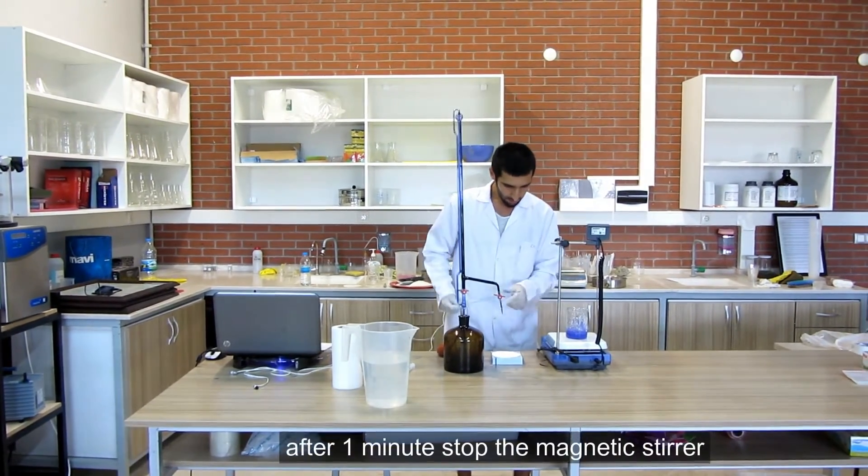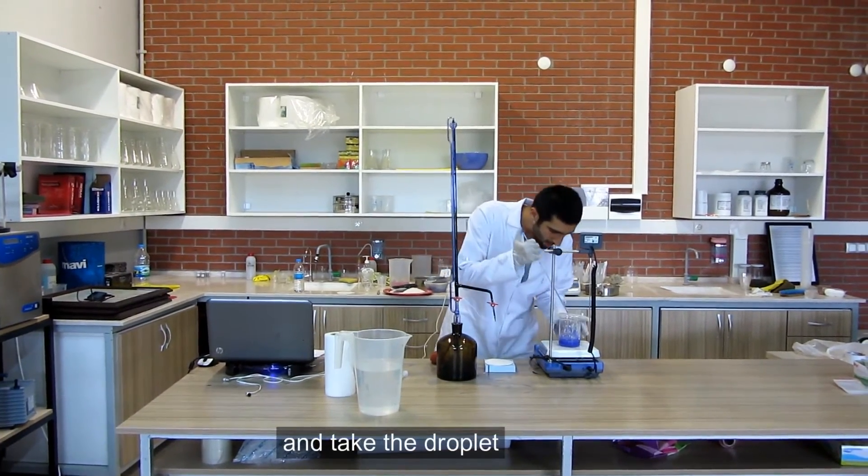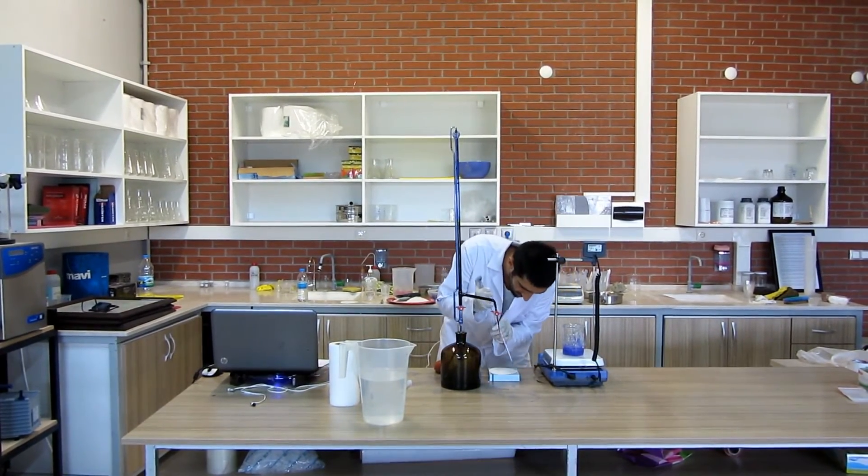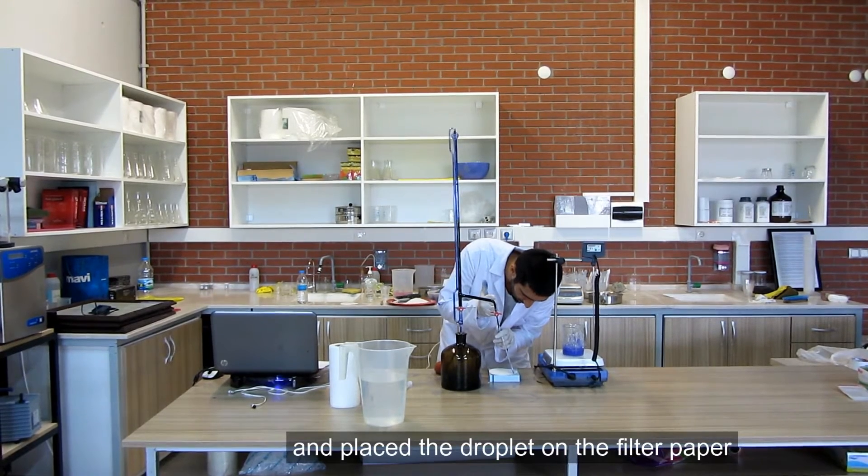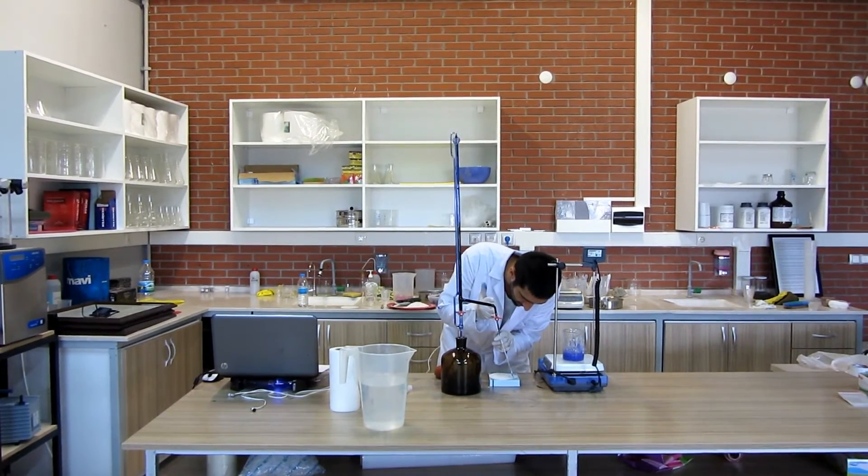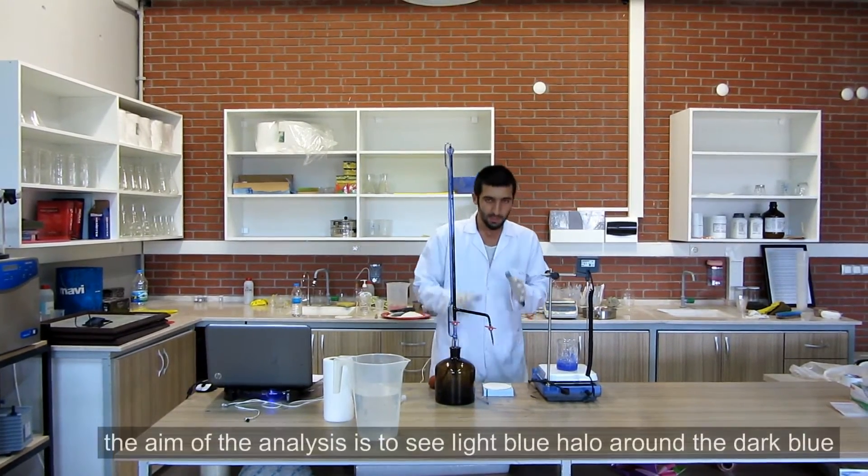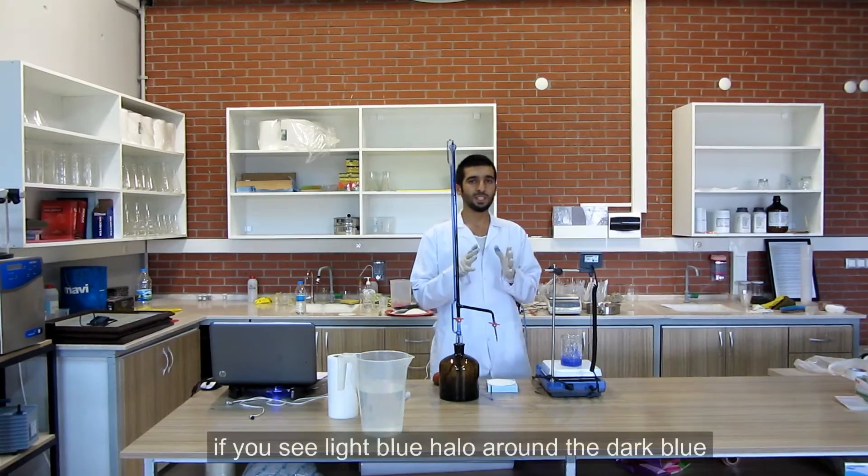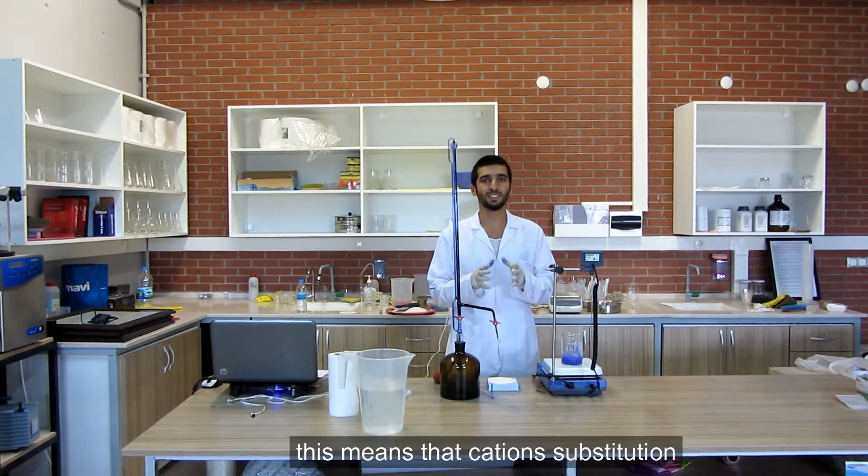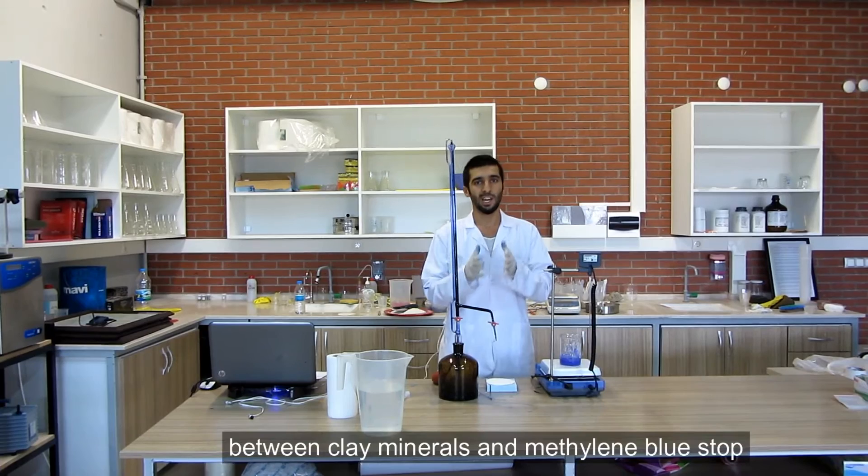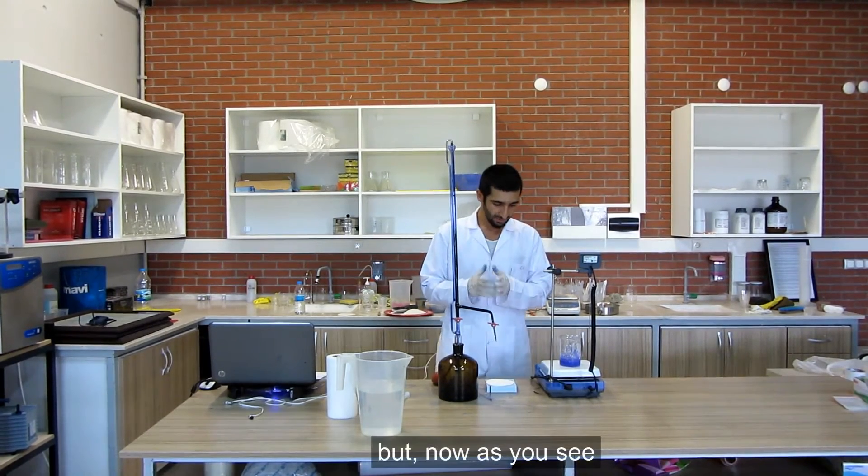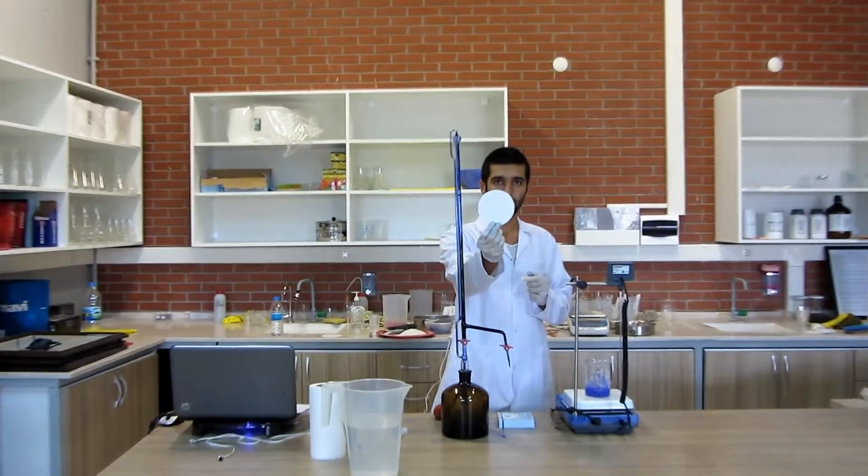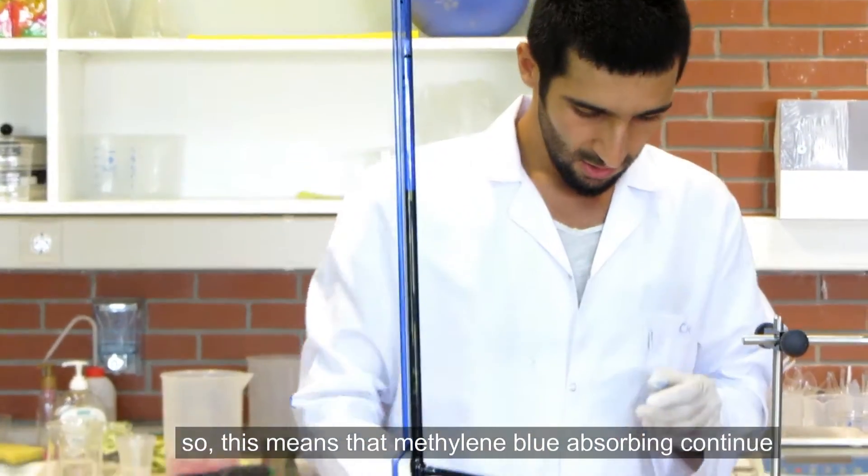After 1 minute, stop the magnetic stirrer and take the droplet from the mixture by using pipette and place the droplet on the filtered paper. The aim of the analysis is to see light blue halo around the dark blue. This is a light blue halo around the dark blue, this means that cation substitution between clay nutrients and Methylene Blue stops. But now as you see there is a white halo around the dark blue, so this means that the Methylene Blue absorbing is continuous.